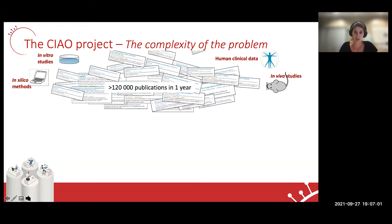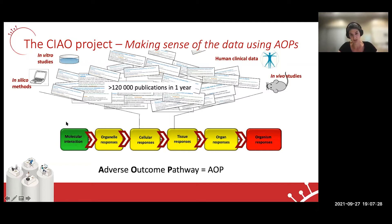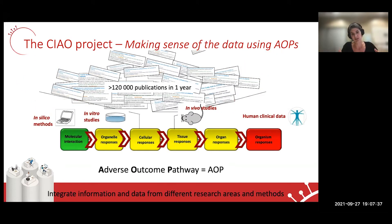The CHAO project fully endorses this paradigm, as its main goal is really to make sense of all this biological data available on COVID-19 by exploiting the adverse outcome pathway. AOP organizes the knowledge to provide a mechanistic understanding of the biological pathway along the different biological levels — from the initial perturbation that occurs at the molecular level, up to cellular, tissue, organ, and organism, with a causal relationship linking the events. AOPs do integrate information and data from different research areas and methods, and thereby they tend to break the silos of knowledge.